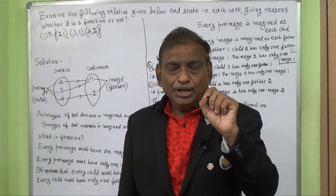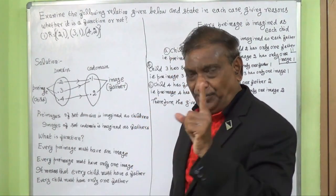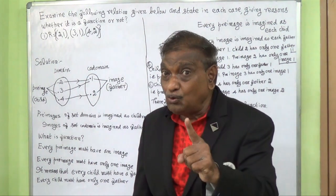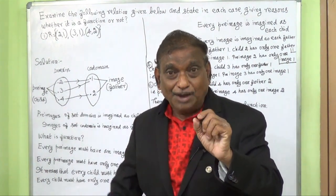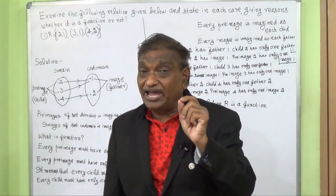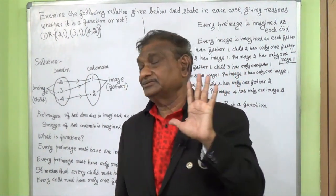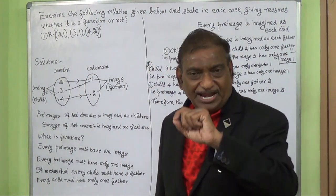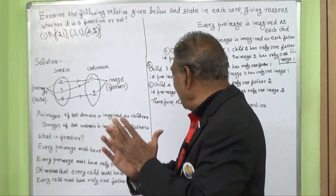Now we are going to define function. A function is a special type of relation. Every pre-image must have an image, and every pre-image must have only one image. For understanding purposes, pre-images of the domain are imagined as children, and the images of the co-domain are imagined as fathers.